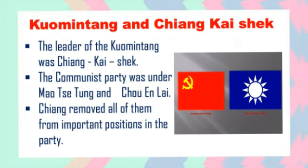Chiang Kai-shek started conquering China by the end of 1925. Chiang Kai-shek had captured Hankou and removed all communists from the Kuomintang party. In 1928, he was successful in capturing Peking. Once again, there was a central government in China.